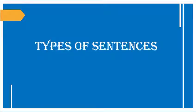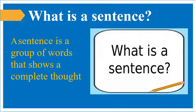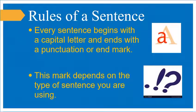Hello students. Today we are going to study types of sentences. What is a sentence? A sentence is a group of words that shows a complete thought. What are the rules of a sentence? Every sentence begins with a capital letter and ends with a punctuation or end mark. This mark depends on the type of sentence you are using.